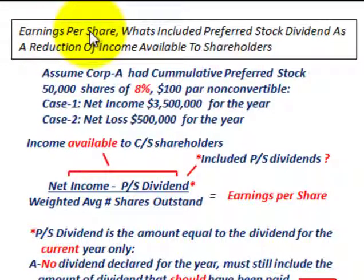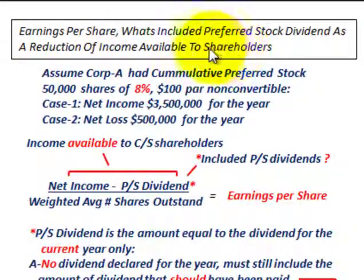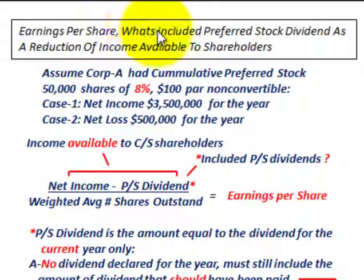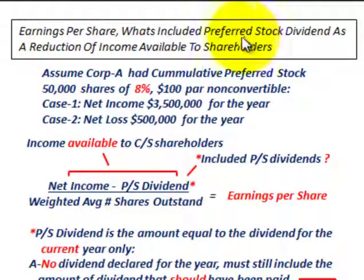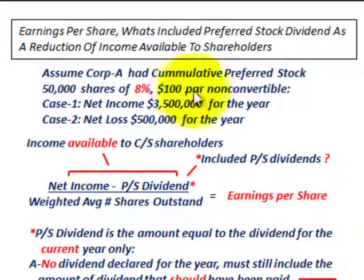We're going to be going over earnings per share and what would be included as a preferred stock dividend reduction from income available to shareholders. We're only going to be looking at a simple capital structure based on common stock outstanding. For example, let's assume Corp A had cumulative, non-convertible preferred stock: 50,000 shares, 8% dividend, $100 par.